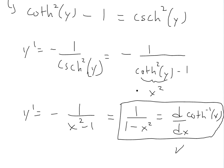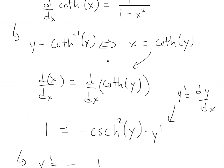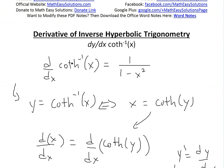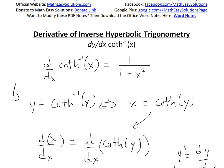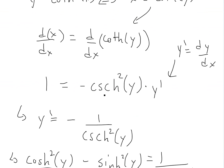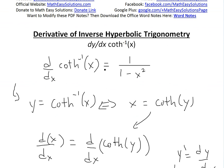Hopefully you learned from this. You can download these exact notes using the Dropbox link below. In the video description, I have a bunch of related videos on inverse hyperbolic functions and basic derivatives, especially the derivative of hyperbolic cotangent leading to hyperbolic cosecant squared. Thanks for watching, and stay tuned for another Math Easy Solution!